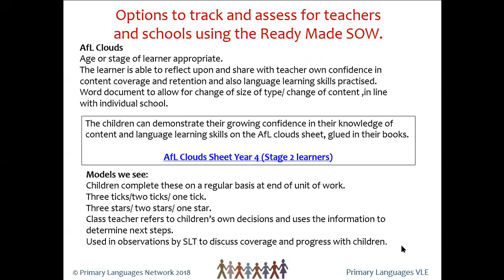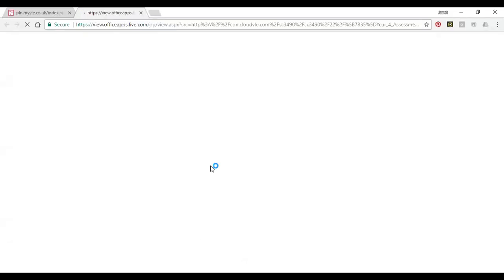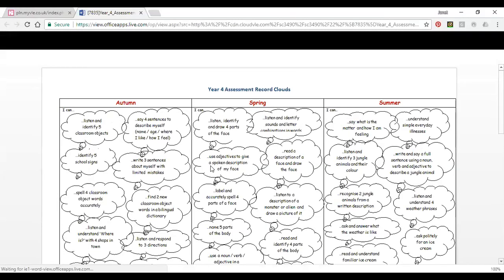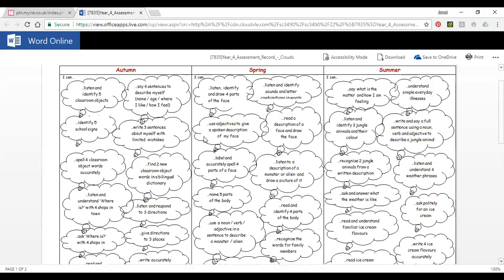The assessment for learning clouds were set up by K Kennedy at Penker's Primary because the teachers really wanted children to be involved in the learning. We looked at the European Languages Portfolio and the bubbles that were there but felt we needed to extend them further to address the DfE attainment targets and language learning skills. They operate just like any other AFL clouds — on three ticks, two ticks, one tick; three smiley faces, two smiley faces; or three stars, two stars. They are Word documents, to be glued into children's books. You can blow them up to make them bigger, reduce the content in the bubbles, or add your own objectives. If you've been looking at jungle animals, you'd probably have been listening and identifying three animals and looking at colours.